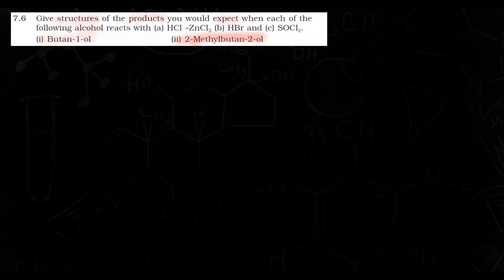Aapko yahan par diye hue hain 3 reagents — aapko batana hai ki jab aap in do alcohols ki reaction karwaenge in reagents ke saath to kya-kya products milne wale hain. Sabse pehle hum check karte hain reagents ko. Jo first reagent aapko yahan par given hai woh hai HCl and ZnCl2. Yeh hai aapke paas Lucas reagent.